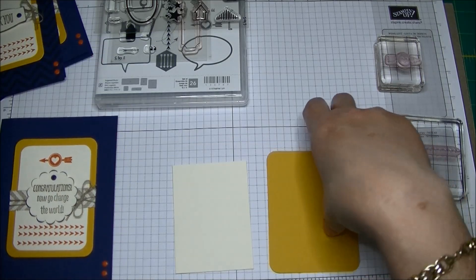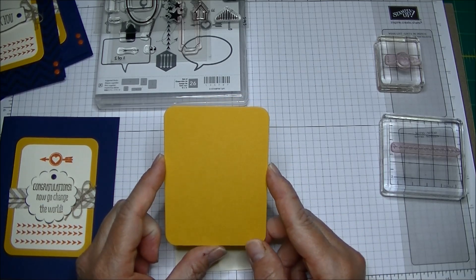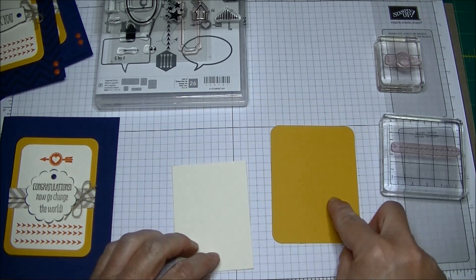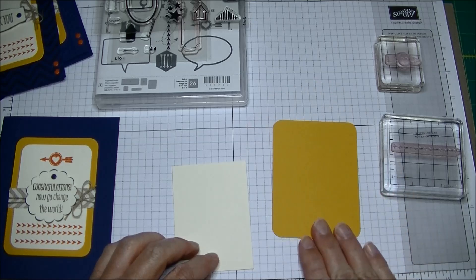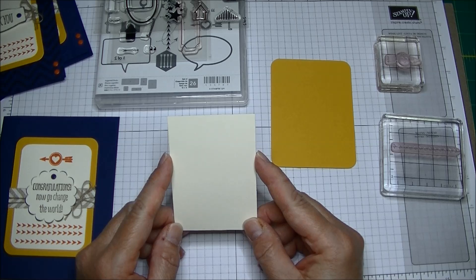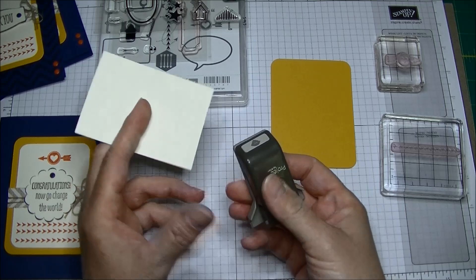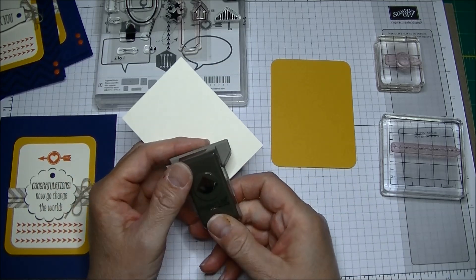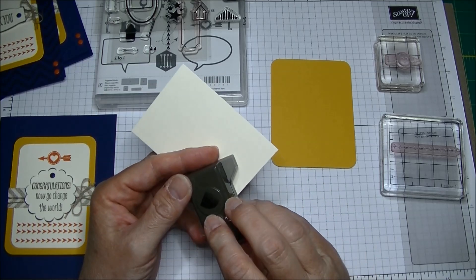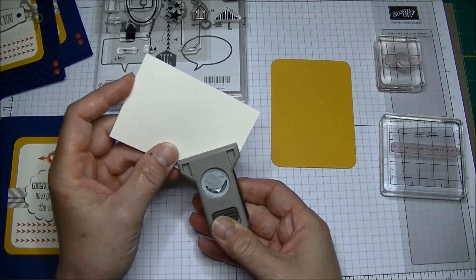All the card bases are Knight of Navy cut at five and a half by eight and a half. I scored and folded it at four and a quarter and I'm using two Tangerine Tango candy dots in the lower right hand corner that come from the Brights collection. To start I have Crushed Curry. I used the smaller curved mat pieces from the Project Life Cards and Labels framelit set. That's such a breeze to do. Then I have a piece of Very Vanilla cut at two and a half by three and a half and the first thing I did was use my Project Life corner rounder. I love this corner rounder.